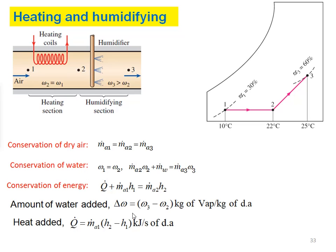From these equations, the amount of water added is Δω = ω₃ − ω₂ kg of water vapor per kg of dry air. Heat added per kg of dry air: ṁ_a1·(h₂ − h₁) kJ/s per kg of dry air. These are the governing equations for heating and humidification.